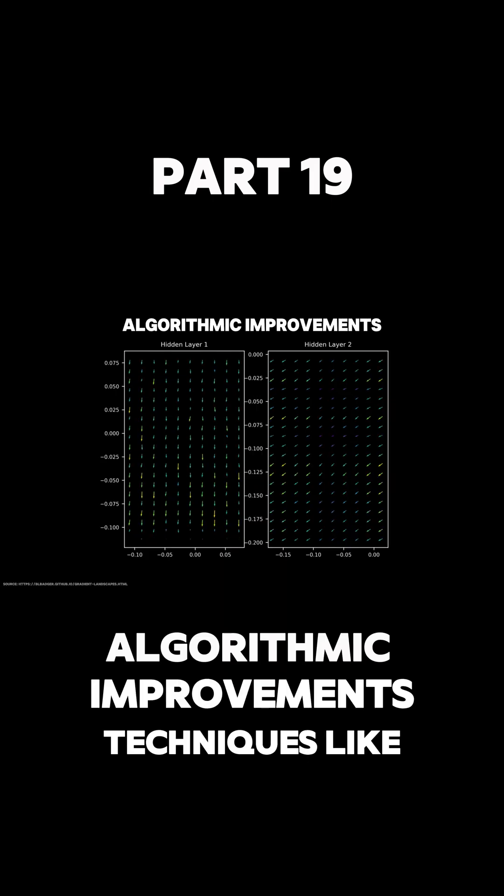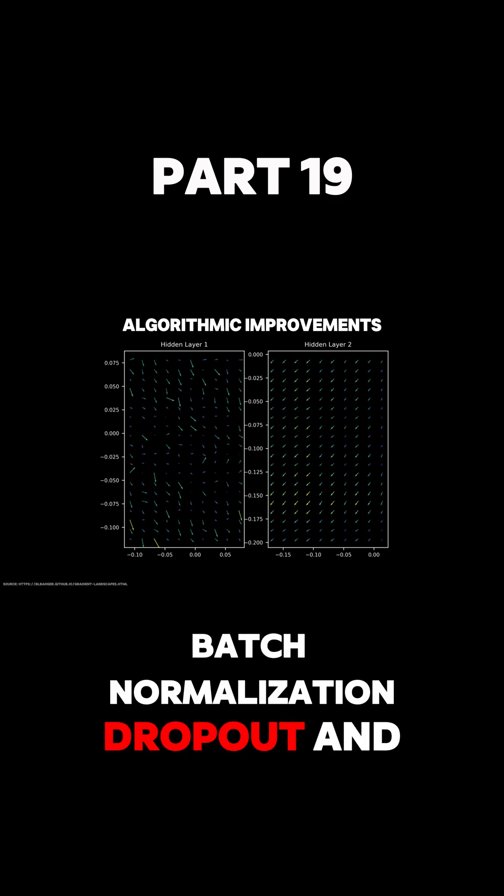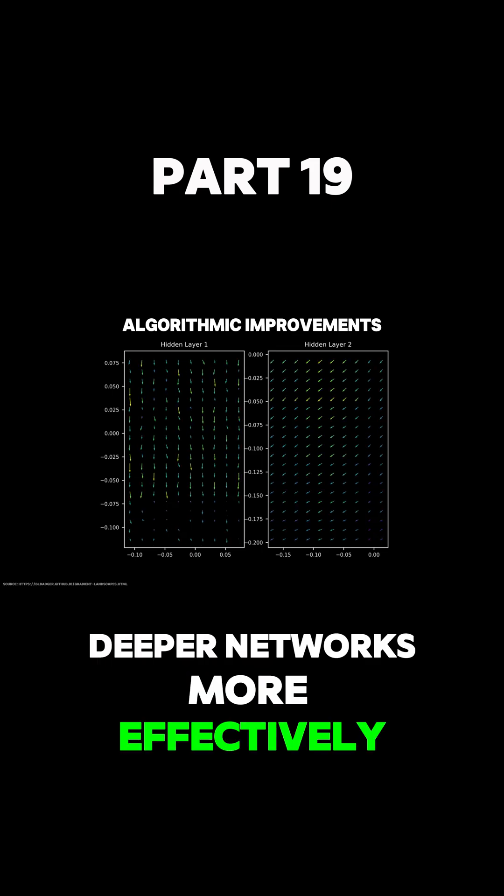Three, algorithmic improvements. Techniques like batch normalization, dropout, and advanced optimizers help train deeper networks more effectively.